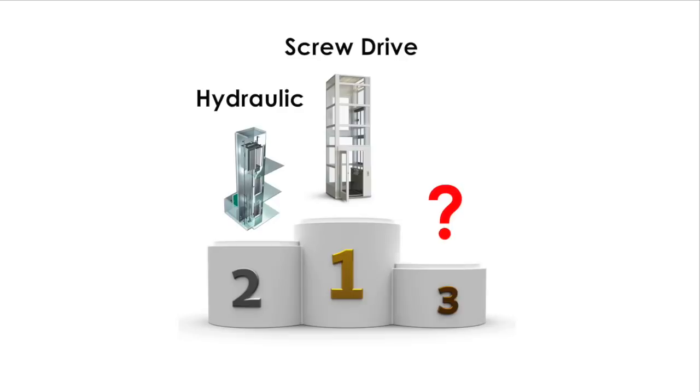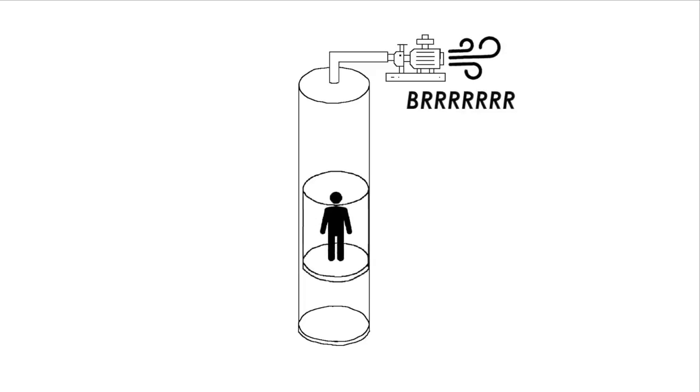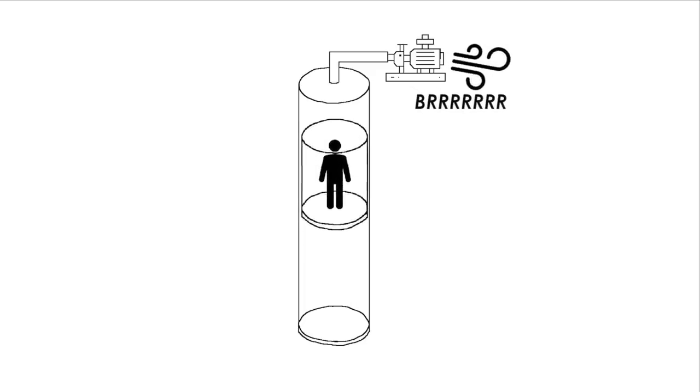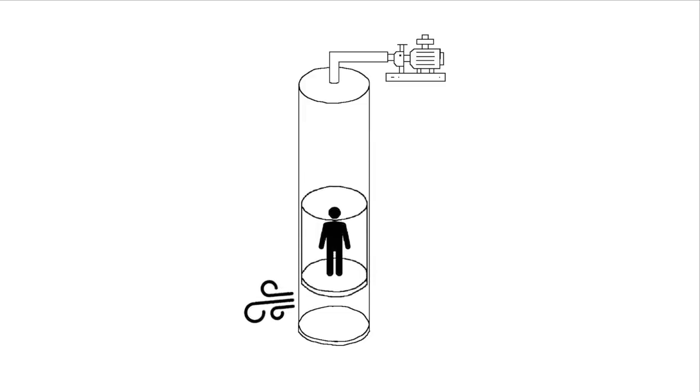Now number three in this list is vacuum elevators. As a concept, I love vacuum elevators, and on paper they seem perfect. The way a vacuum elevator works is they suck out the air above the capsule and by vacuum basically suck the capsule up. And then to go back down they simply let the air out at the bottom and your capsule is kind of gently lowered on a cushion of air.